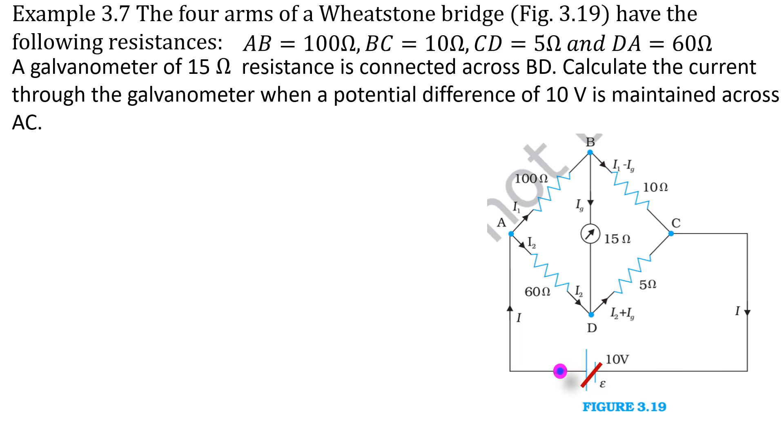Hello friends, welcome to Rajavali education channel. In this video we are going to see how to solve example 3.7. Here we have to calculate the current through the galvanometer when a potential difference of 10 volt is maintained across AC. The other information we can get from this figure.